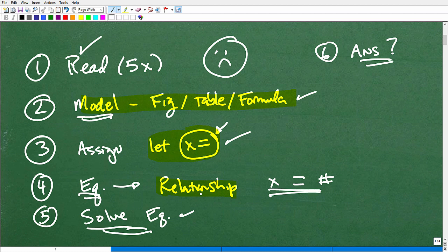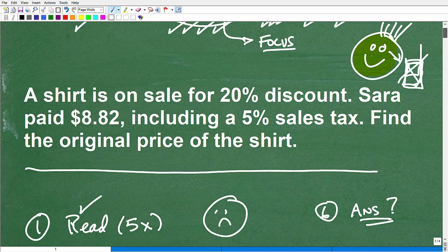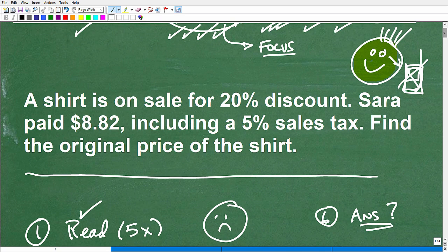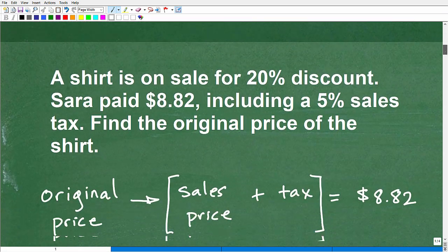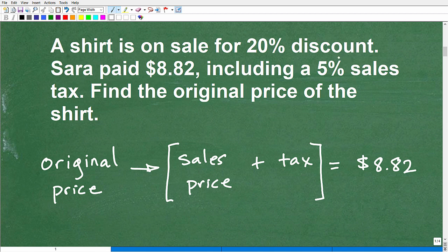Again, in algebra, there's a lot of classic, typical type of problems, and this is one of them. Okay, so if you want to try this problem without me, without seeing a solution, here it is. You can pause the video and give it a whirl now that you have this general guidance. But if you don't want to see my solution, go ahead and keep the video paused because I'm going to get into my solution now. All right, so a shirt is on sale for 20% discount. Sarah paid $8.82, including a 5% tax. Find the original price of the shirt. So that is the problem.